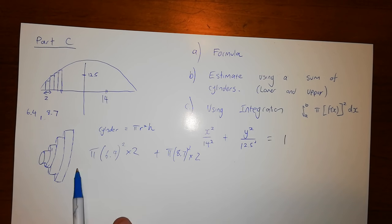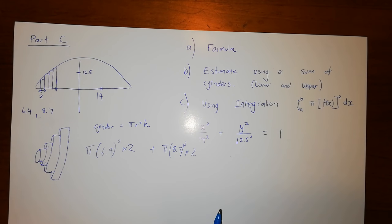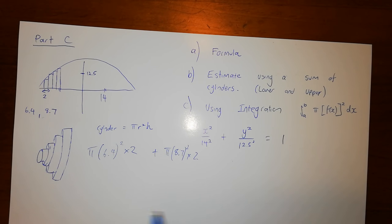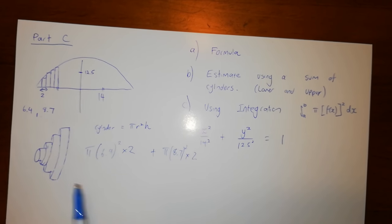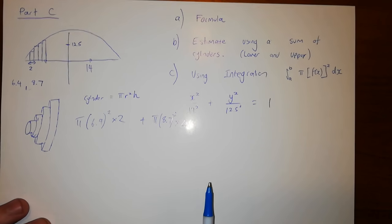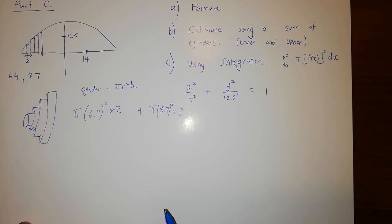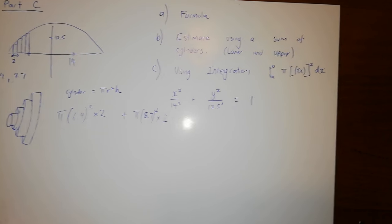So π is common, 2 is common, and we can pull them out the front to make that calculation easier. But we're just thinking of it as a sum of cylinders. So there should be two calculations: one will be for lower rectangles and one will be for upper rectangles.